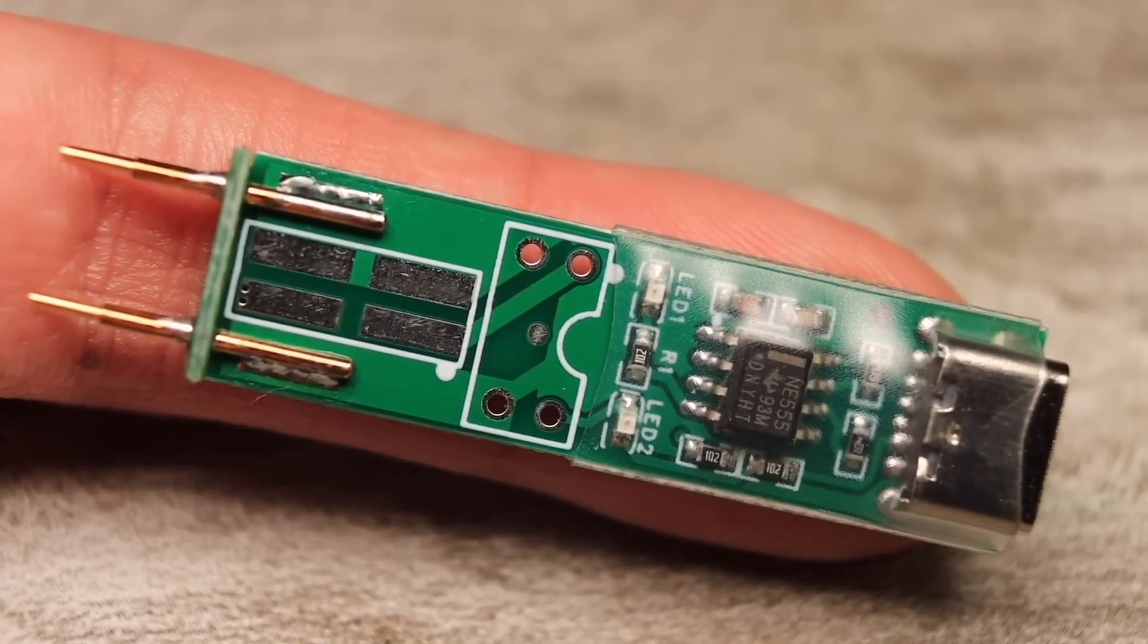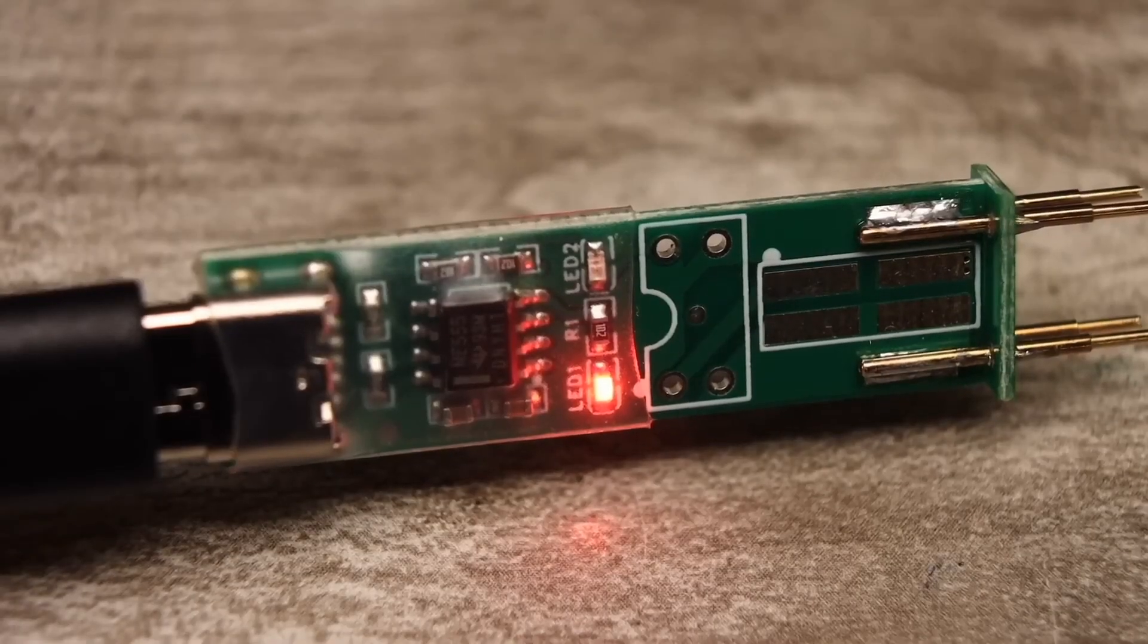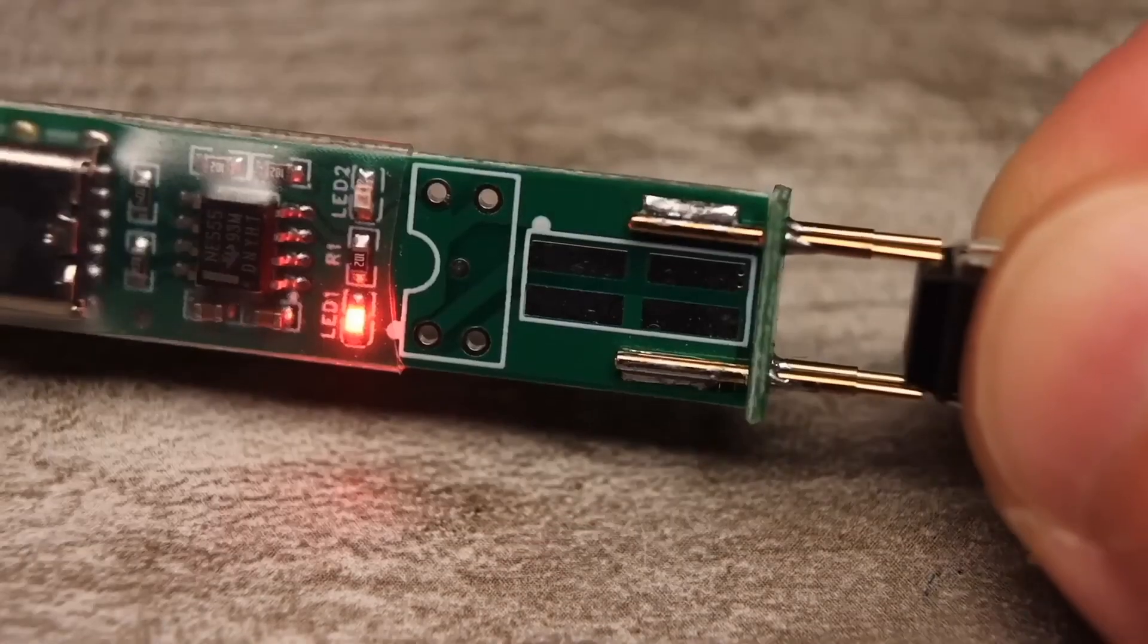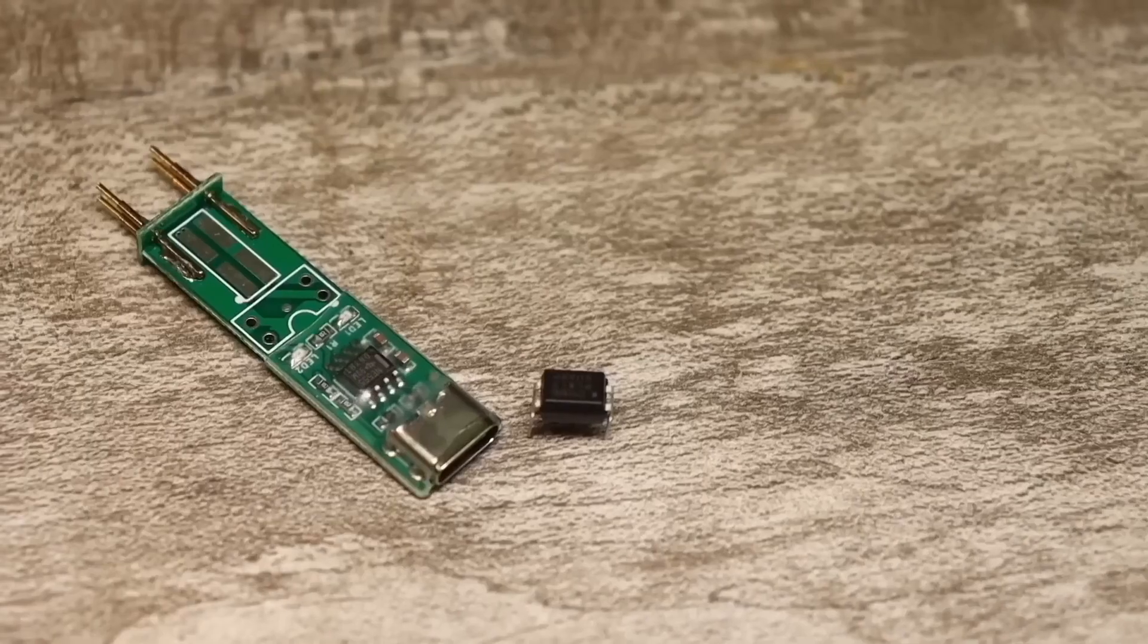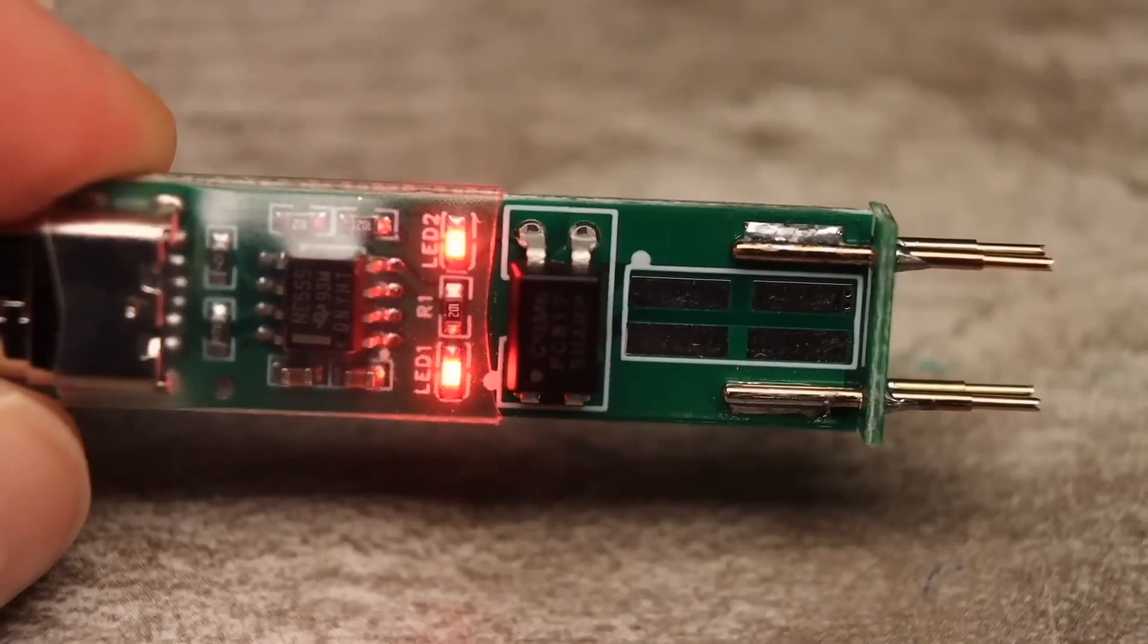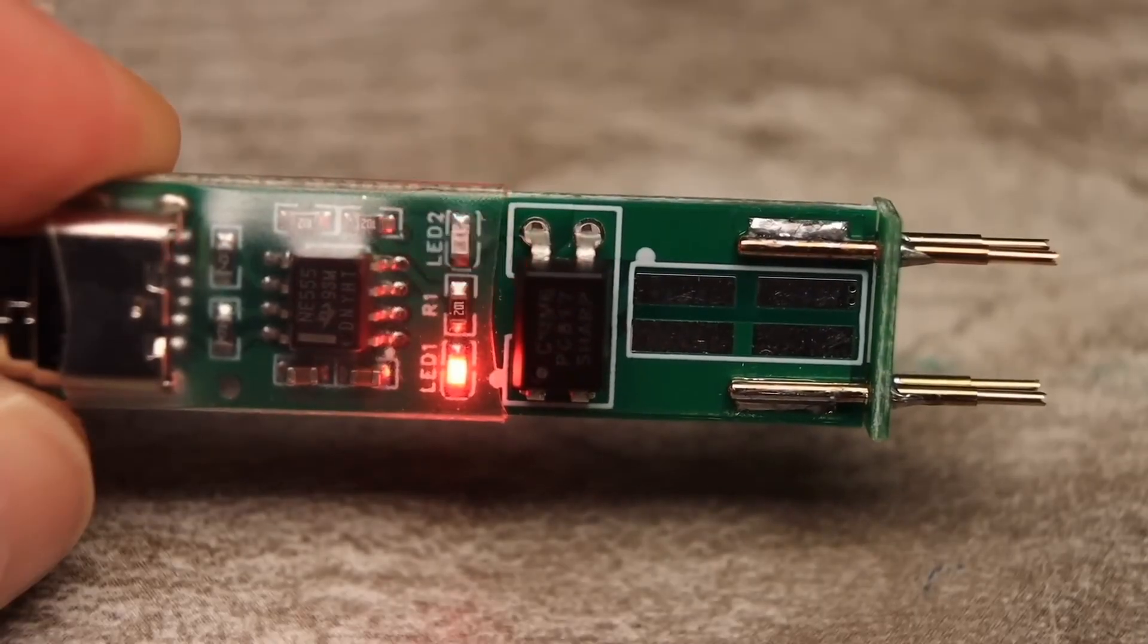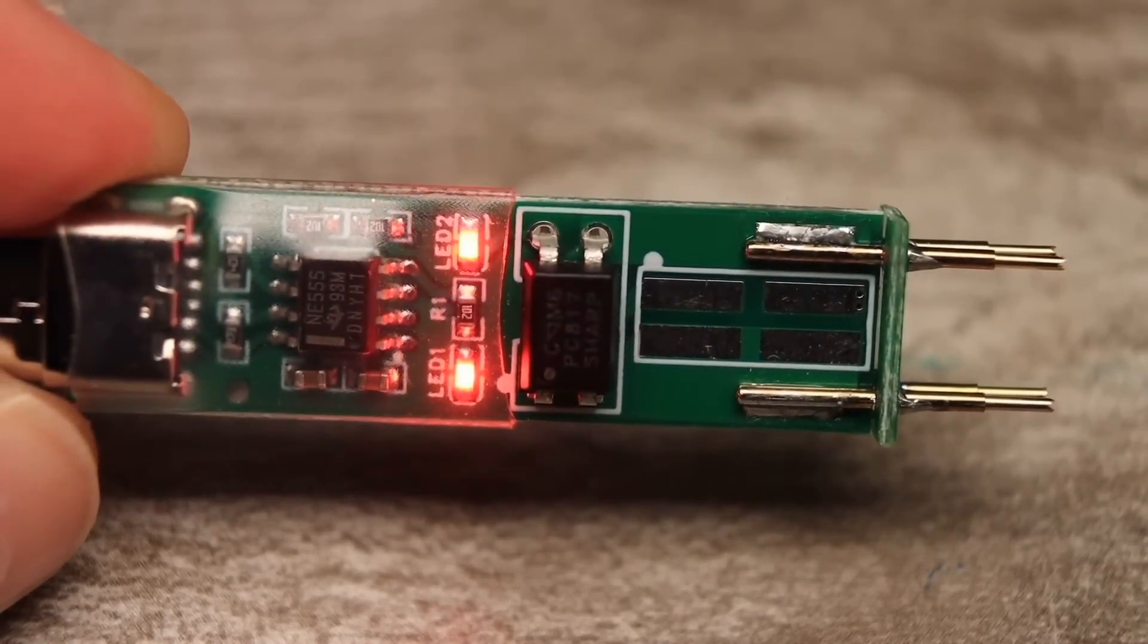This board features an NE555 chip on board, which acts as a pulse generator. The first LED stays on constantly, and the second will blink if the optocoupler is working properly. The circuit tests the optocoupler quite thoroughly. Power is supplied to the optocoupler's LED, which causes the built-in transistor to turn on. If the second LED starts blinking, it means the optocoupler is working properly.